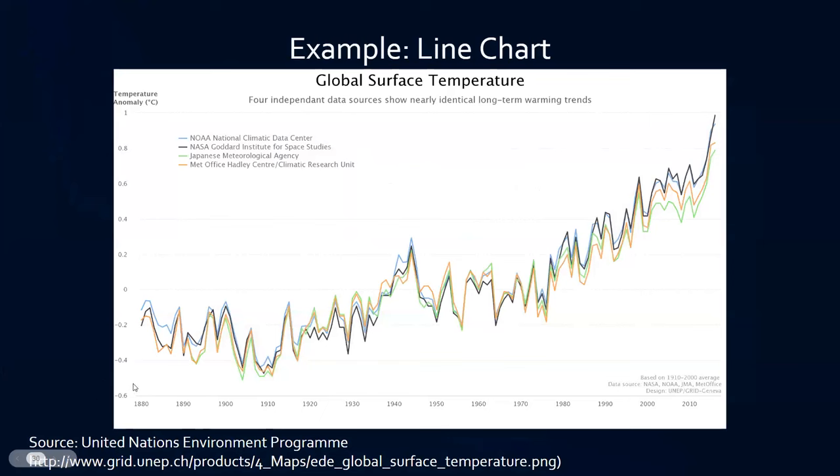Our line chart example, titled Global Surface Temperature, shows different government agencies' measurement of global temperature over a 150-year period. As you can see, each line represents an agency's measurement of temperature. As the timeline increases year after year, the temperature rises and lowers in response. From the direction of the line chart, we might conclude that the global temperature has generally been trending upwards over the past 150 years.